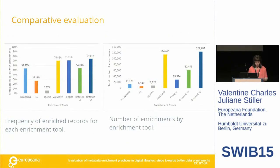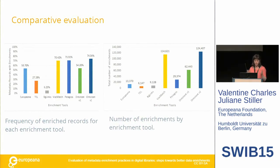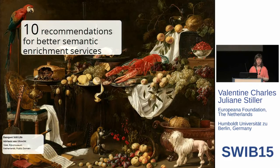I'm not going to go into all the details of the comparative evaluation — you can find everything in the report. As an example, depending on the different tools, you can see the coverage of the enrichment and how many enrichments you were getting per record. For example, for OntoText (the dark blue one), there is a high level of coverage and also a high number of enrichments per record. But the question is whether those enrichments are good ones, because when you look at those graphs you might think the results are pretty good — but you still have to look into the details.